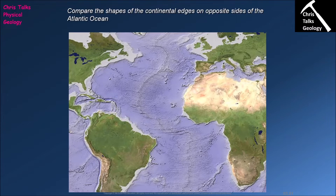The first piece of evidence that was used is something which is referred to as the jigsaw fit. There's actually a very good chance that you spotted this when you were in high school. You were probably taking a geography class, you had a textbook in front of you with a map of the world. And one of the things you notice very quickly is that if you look at the coastlines of some of the continents, you can see quite easily that they would actually lock together, they would slot into each other a bit like a jigsaw.